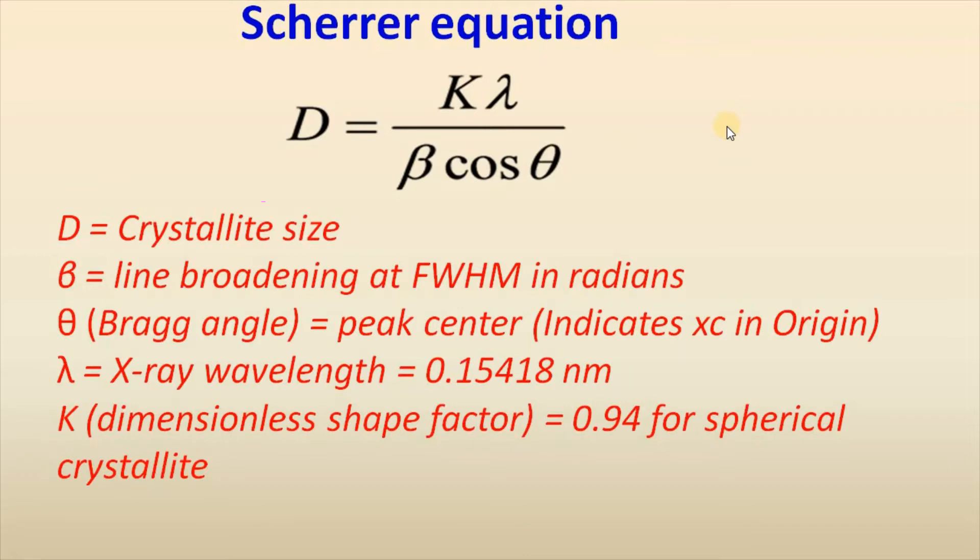Here is Scherrer equation where K is dimensionless shape factor. Easily its value is 0.94 for spherical crystallite and D is crystallite size. Beta is line broadening at full width at half maximum in radians. Theta is Bragg angle which indicates peak center, and lambda is X-ray wavelength which is 0.15418 nanometer.